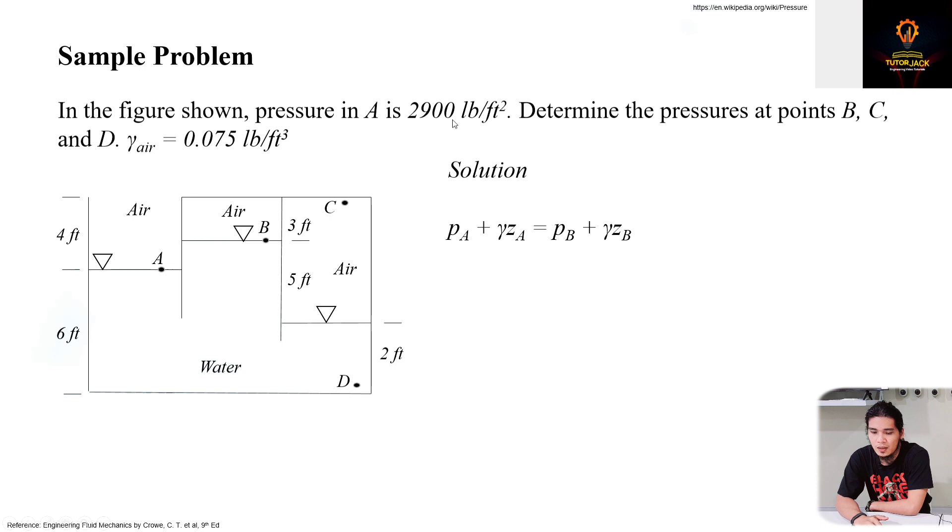So given pressure A, we have 2,900 pounds. And then also given with the elevations here, we know the unit weight of water. The unknown is PB. So rearranging our equation, it becomes PA minus or plus gamma times ZA minus ZB.